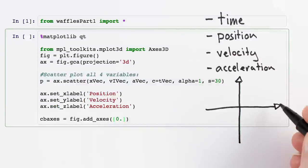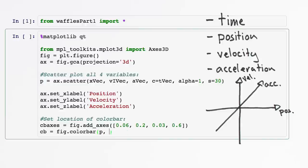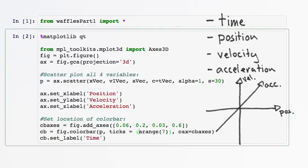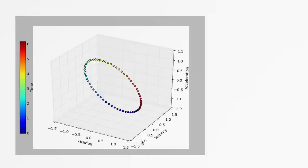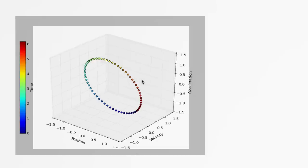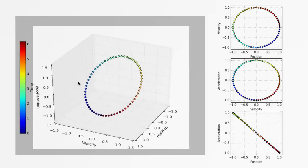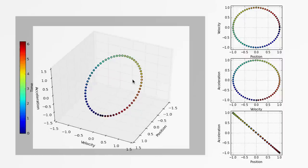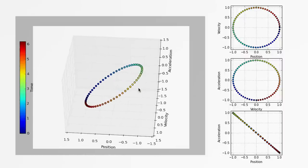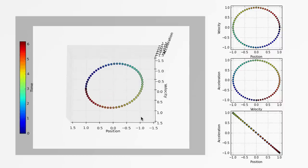We'll give position, velocity, and acceleration each their own spatial dimension, and make our time dimension control the color of our points. We see a three-dimensional ring, and if we look at two dimensions at a time, we see that our position velocity and velocity acceleration plots form circles, while our position acceleration plot forms a line with a negative slope.